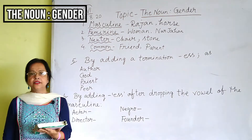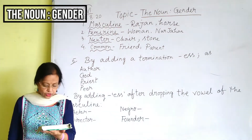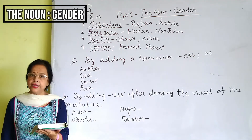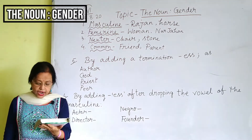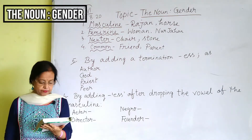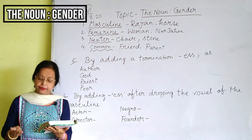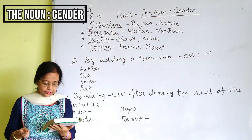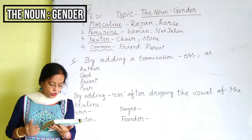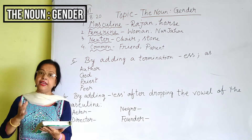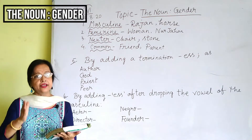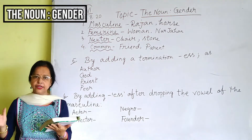Please remember that all material nouns, abstract nouns, collective nouns, and all lifeless things, lower animals, and very young children are generally used in the neuter gender.